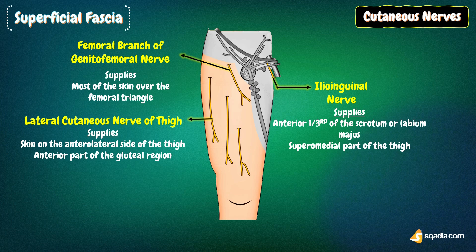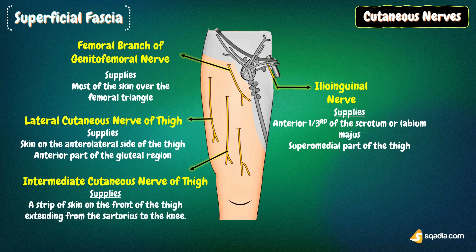The intermediate cutaneous nerve of the thigh is a branch of the anterior division of the femoral nerve. It pierces the deep fascia at the junction of the upper one-third and middle one-third of the thigh, divides into two or more branches, and supplies a strip of skin on the front of the thigh extending from the sartorius to the knee.